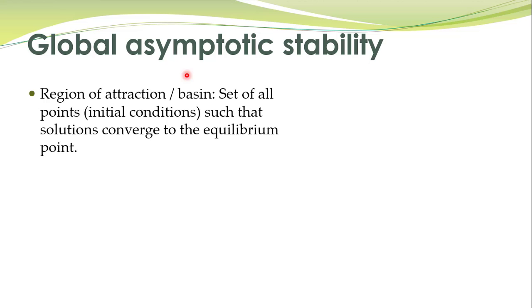We have already talked about global asymptotic stability. Just as a revision, we know that we have talked about region of attraction, which was also called basin. The set of all initial conditions for which trajectories converge to the equilibrium point — that set was called region of attraction.